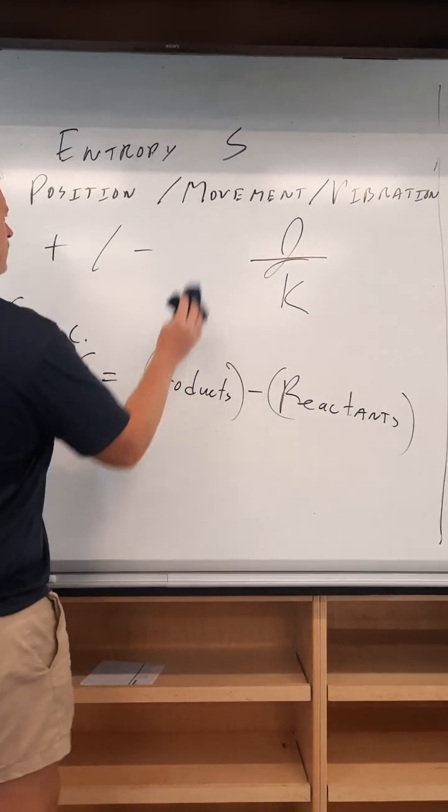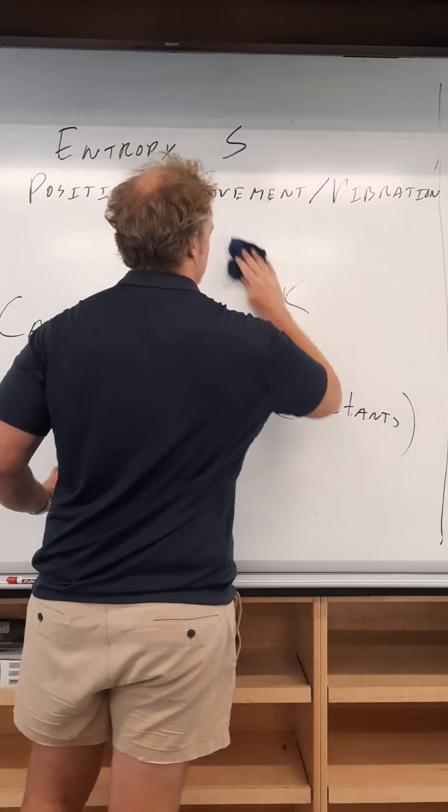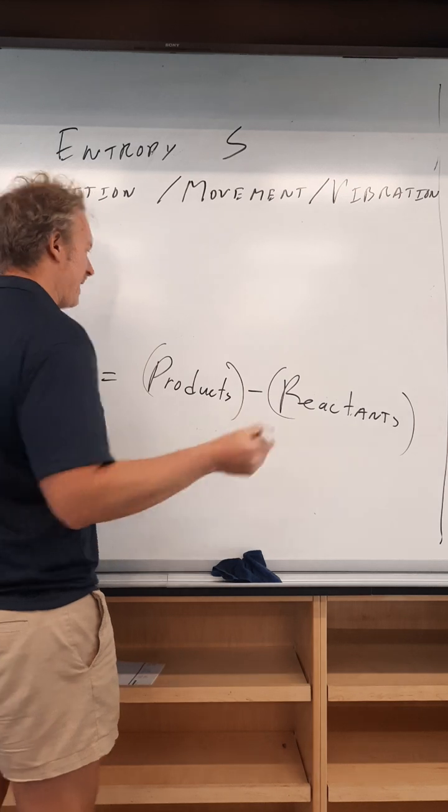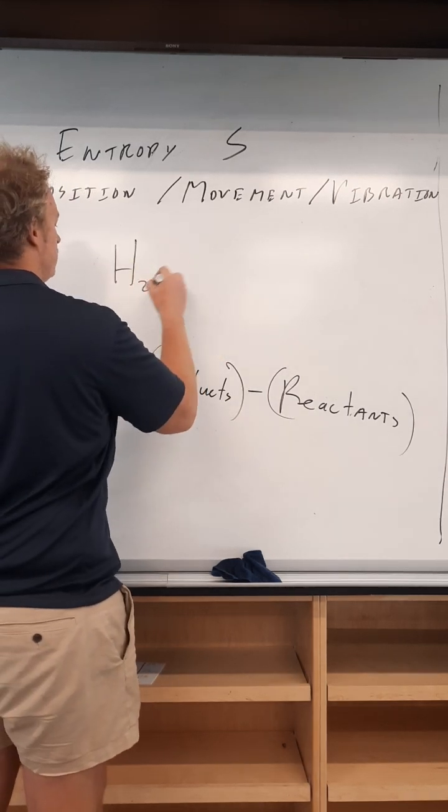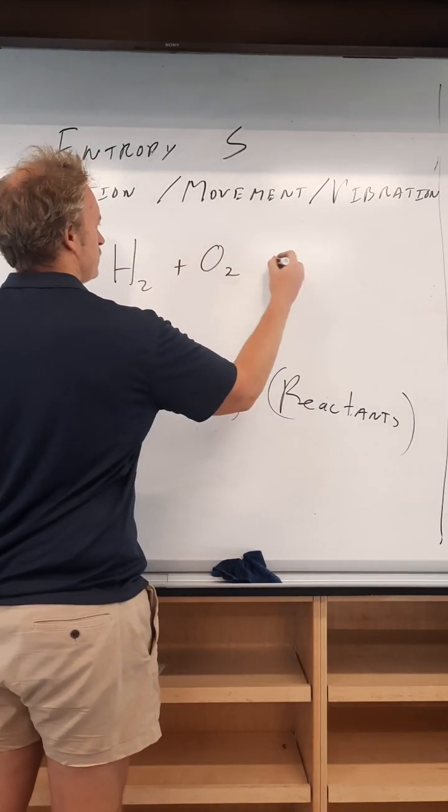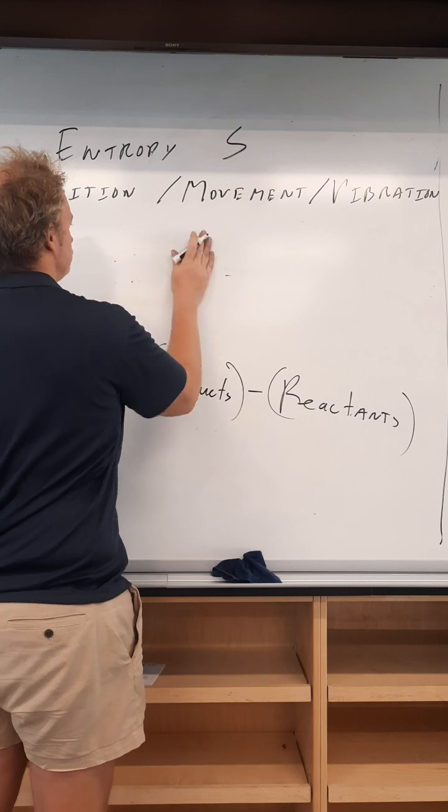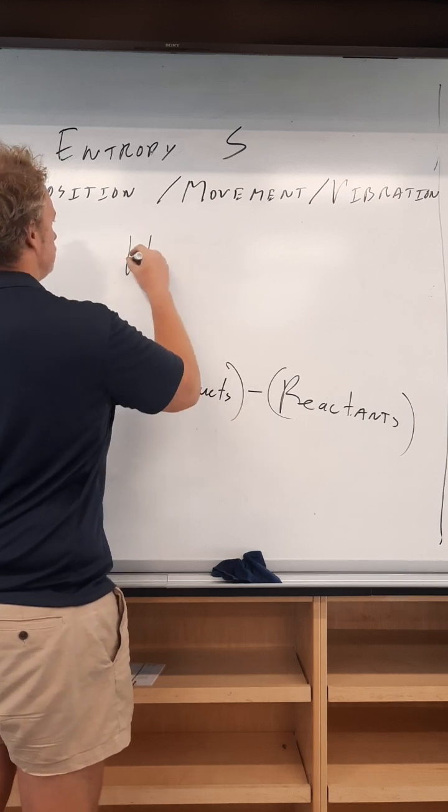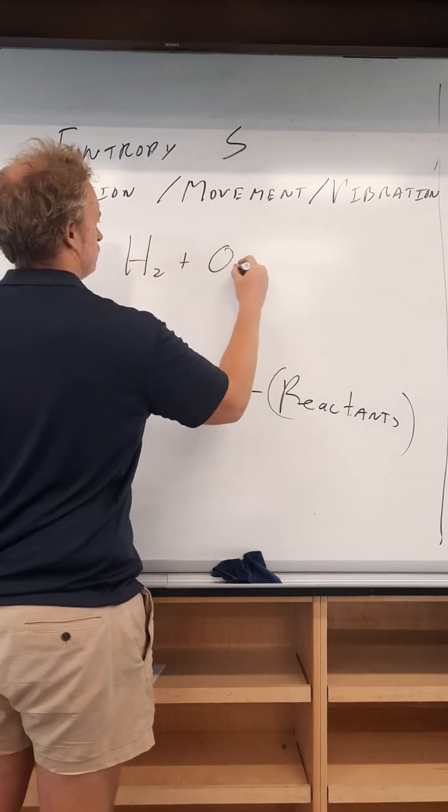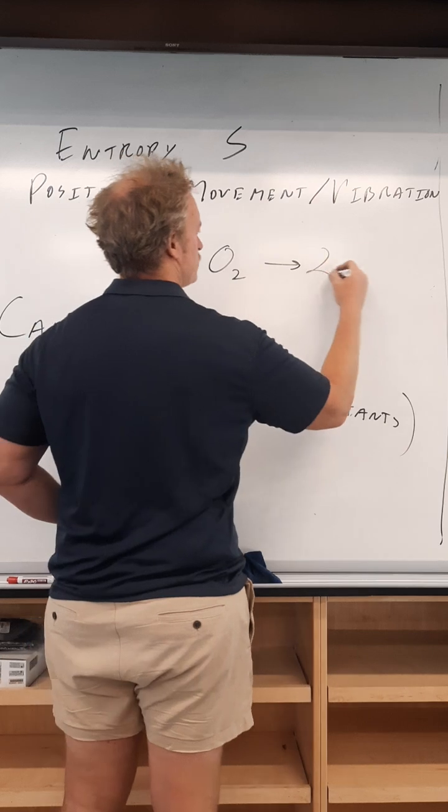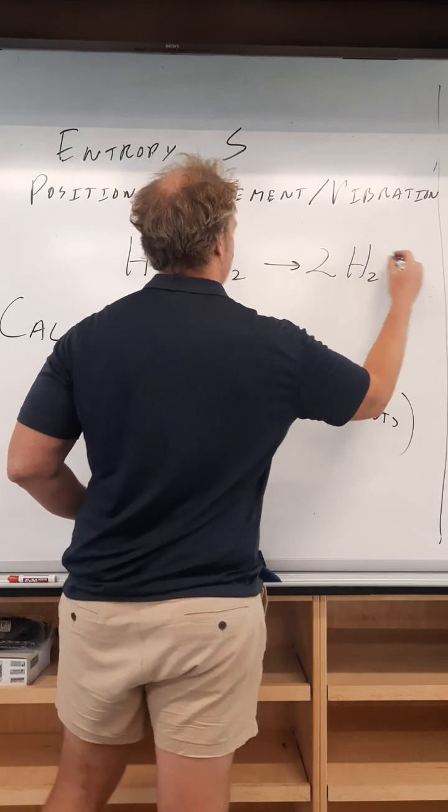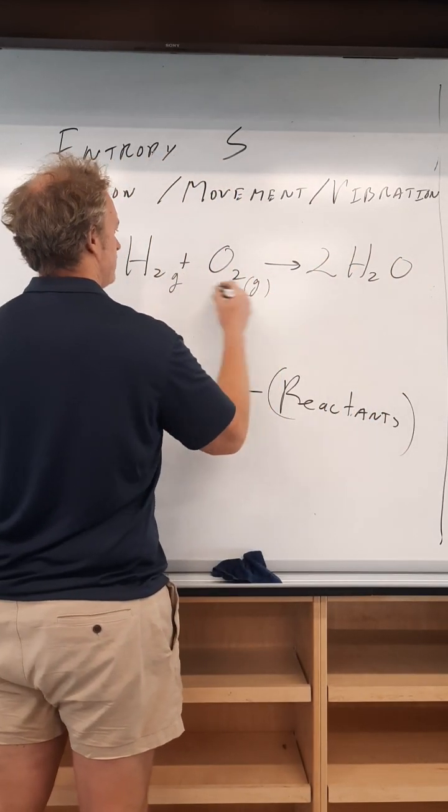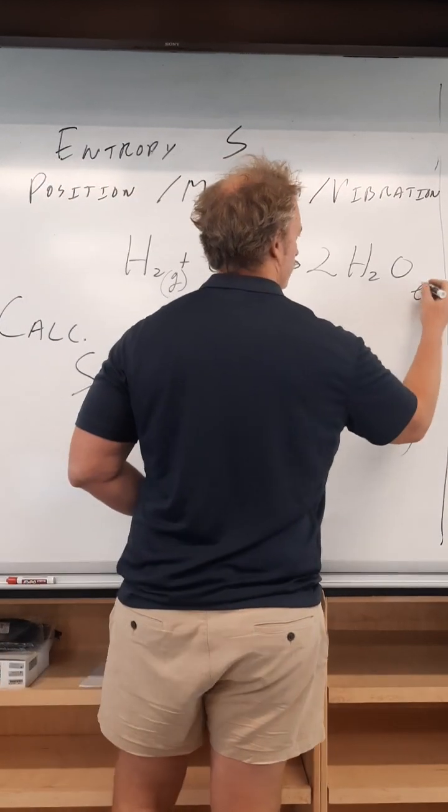So when you have a balanced chemical reaction, I'm just going to write in a balanced chemical reaction right here: H2 plus O2 produces H2O. Let's make these guys a gas and these guys a liquid.